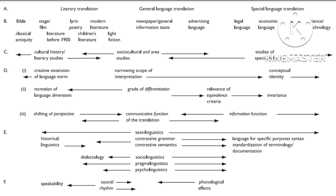Level F is the lowest order level. It deals with phonological aspects such as alliteration, rhythm, and speakability of stage translation and film dubbing.